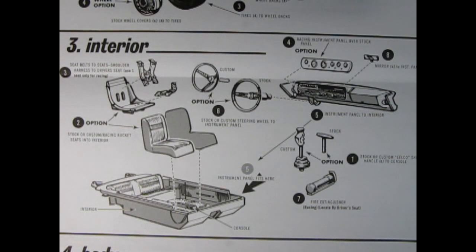Step three shows our interior assembly. You get the choice of building this stock, custom, or racing. So what we have to start with is the interior tub with the center console and the rear seat molded in place, as well as the side panels. Then you can drop in your stock bucket seats or the racing seat with the three-point seat belts.